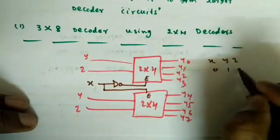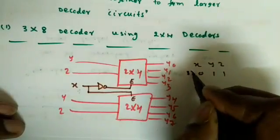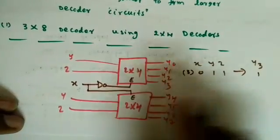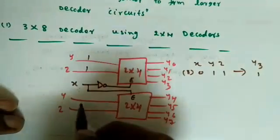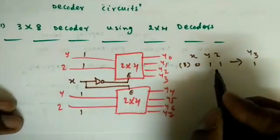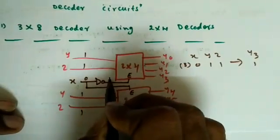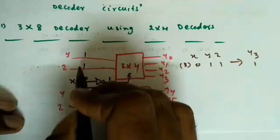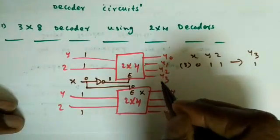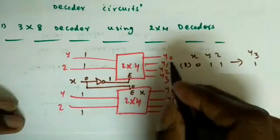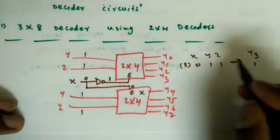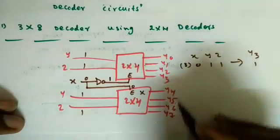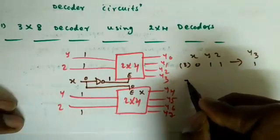Let's verify: suppose xyz = 011, which is decimal 3, so y3 should be 1 and all others 0. y and z are both 1, so both decoders receive input 11. Since x=0, the upper decoder is enabled (gets a 1) and the lower decoder is disabled (gets 0, so all outputs are 0). The upper decoder with input 11 sets y3 high, remaining all zero. Correct.